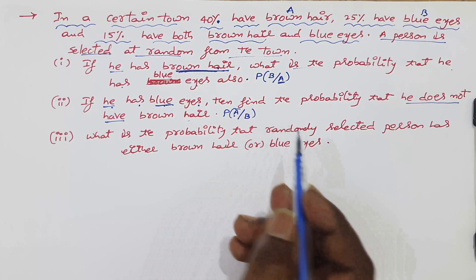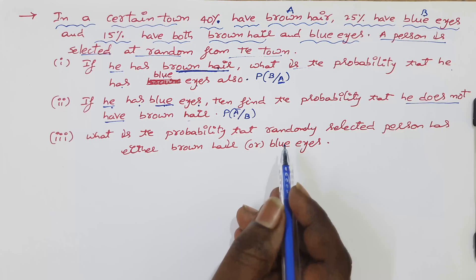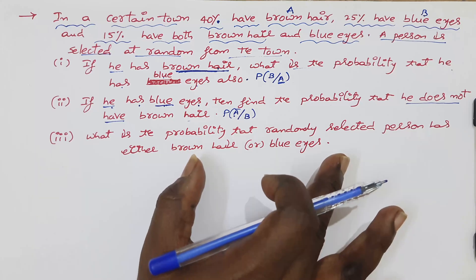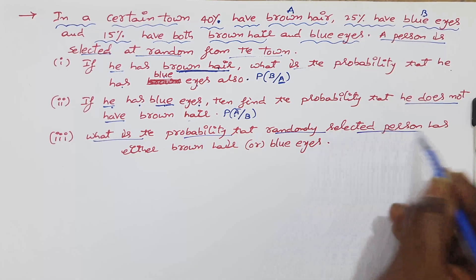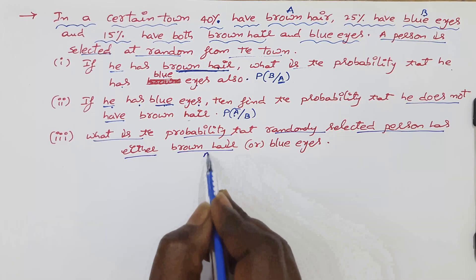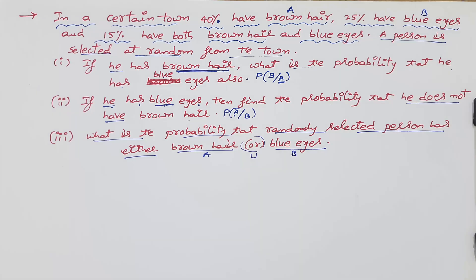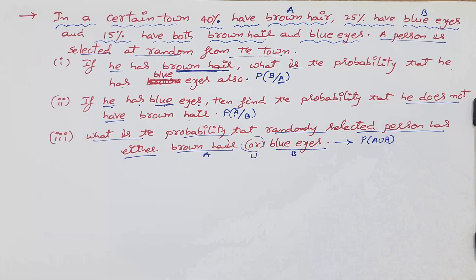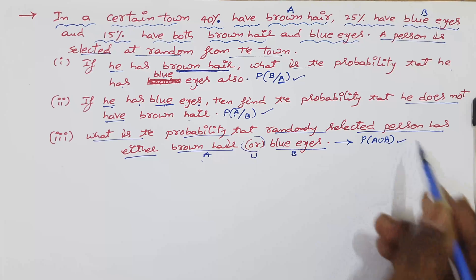Reading the statement carefully and converting it to symbolic form is the most important thing in probability. The third question asks for the probability that a randomly selected person has either brown hair or blue eyes — that is, P(A∪B). So our solution has three parts.